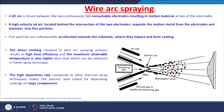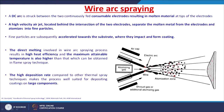The direct melting in wire arc spraying results in high heat efficiency, and the temperature attainable is higher than in flame spray technique. The high deposition rate compared to other thermal spray techniques makes this process suitable for depositing coatings on large industrial components.